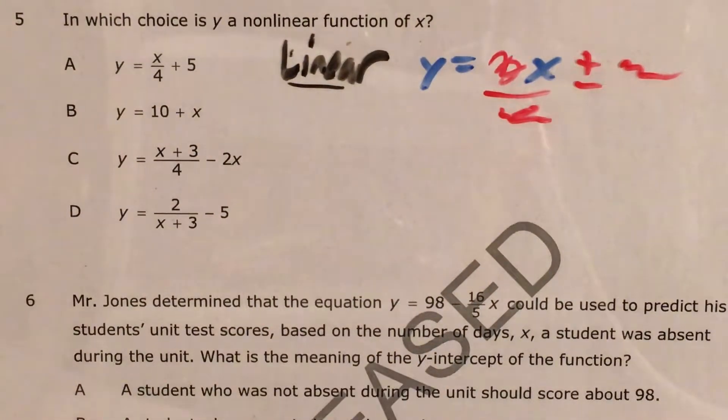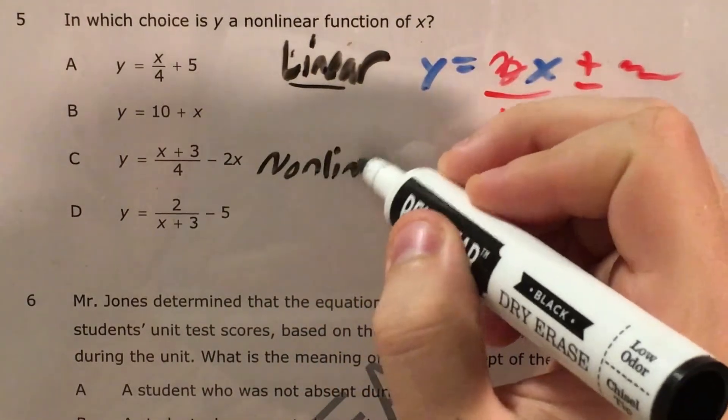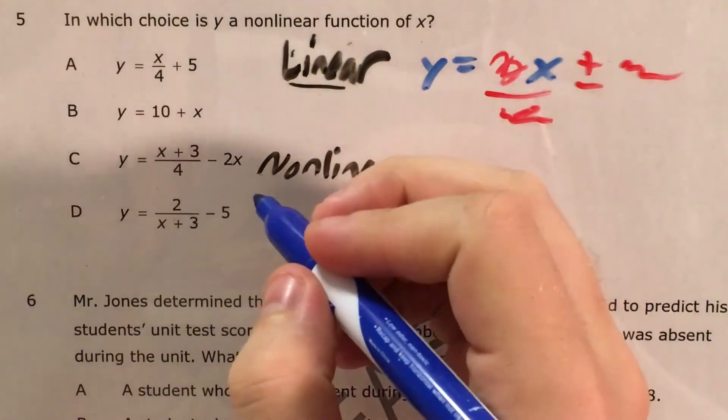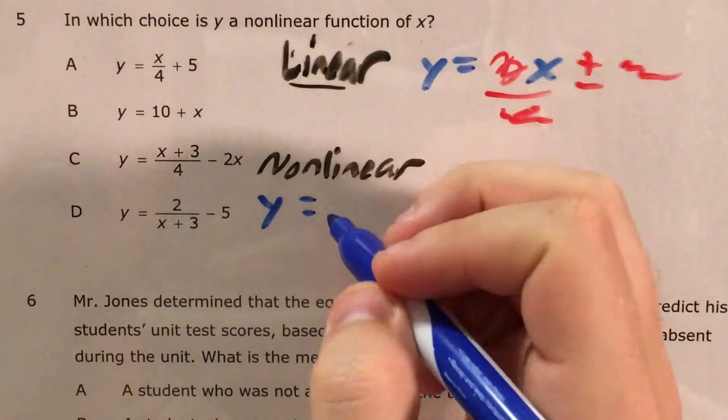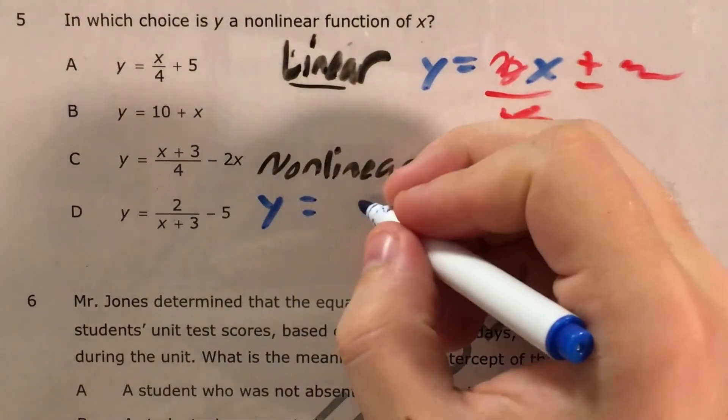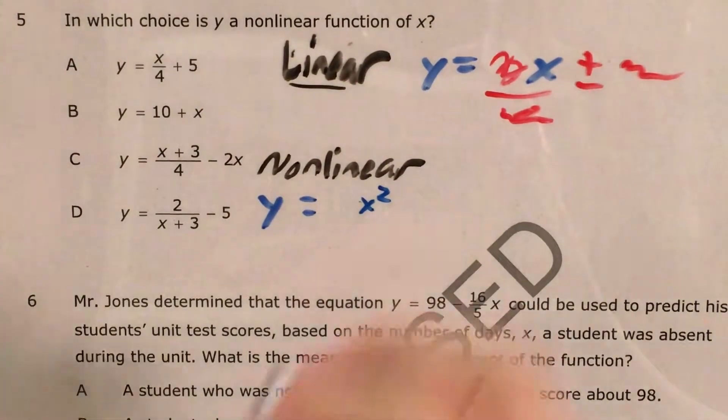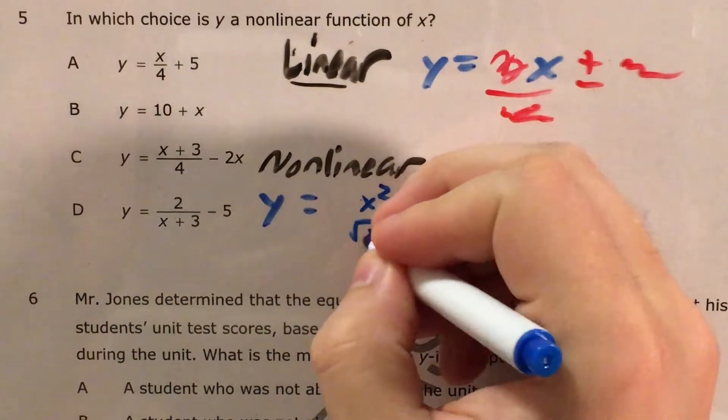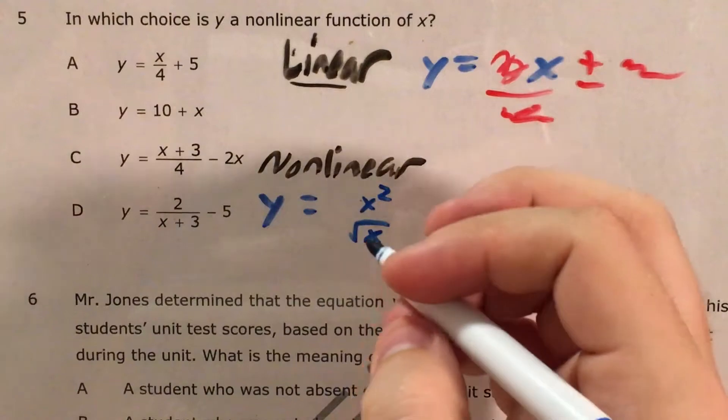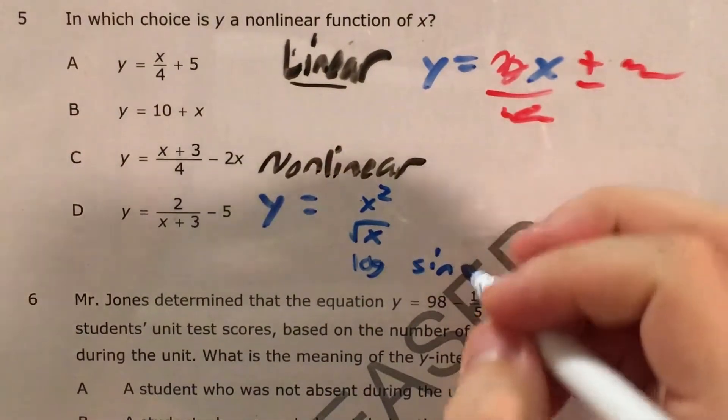But now nonlinear is anything else. And if we have a nonlinear function, we're going to see something like y equals and then any of the following. We could see x squared or x with some other exponent in it that's not one. We could see the square root of x. That's a thing. We could see some other crazy math words like log or sine.